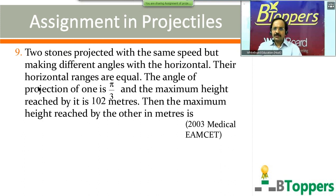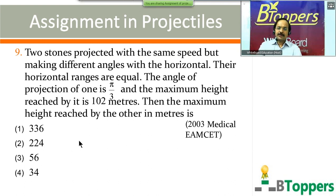Question number 9: two stones are projected at the same speed but making different angles with the horizontal. Their horizontal ranges are equal. The angle of projection of one is π/3 radians and the maximum height reached by it is 102 meters. The maximum height reached by the other in meters is — four options shown on screen. This question was given in one of the previous MSET examinations, medical entrance approximately 2003.